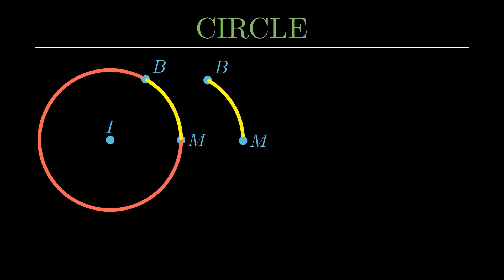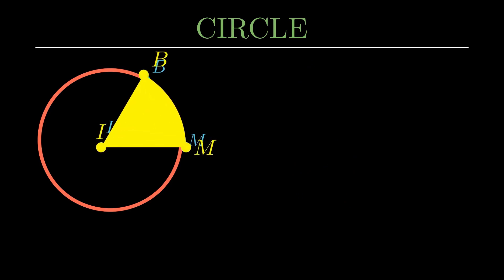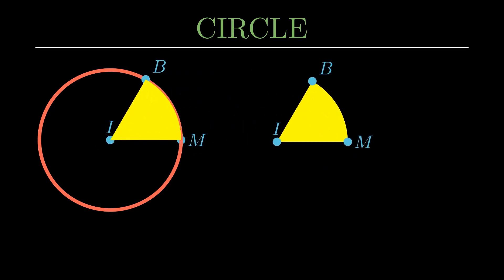A section of the circle is called an arc. A line segment that connects two points of the circle is called a chord of the circle. A section of a circle bounded by two radii and an arc is called a sector.